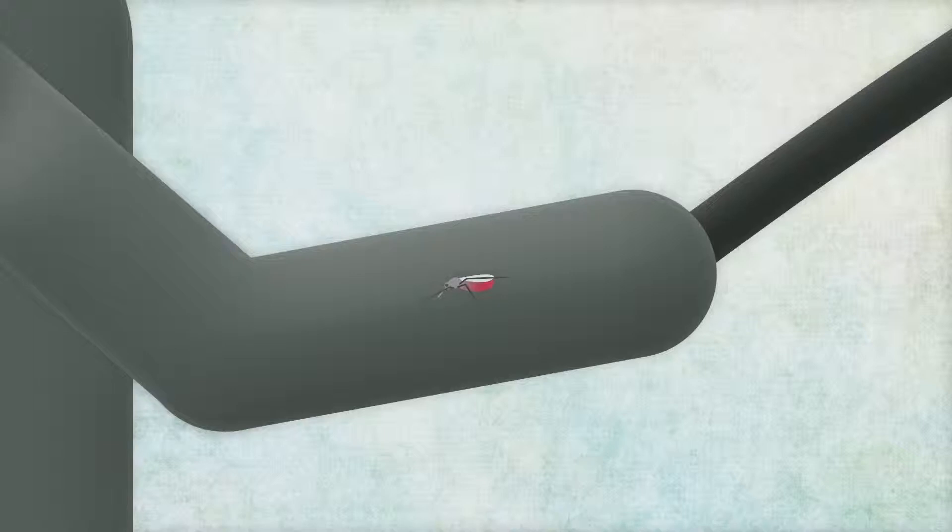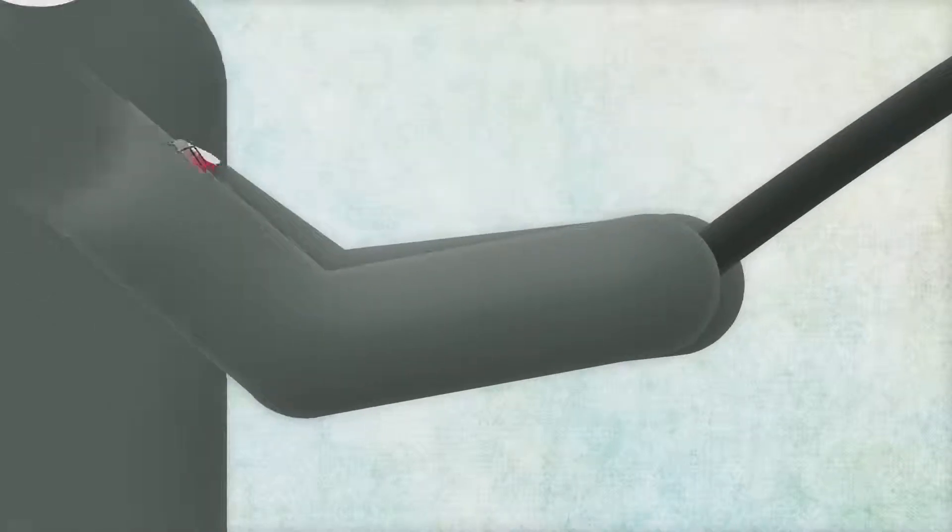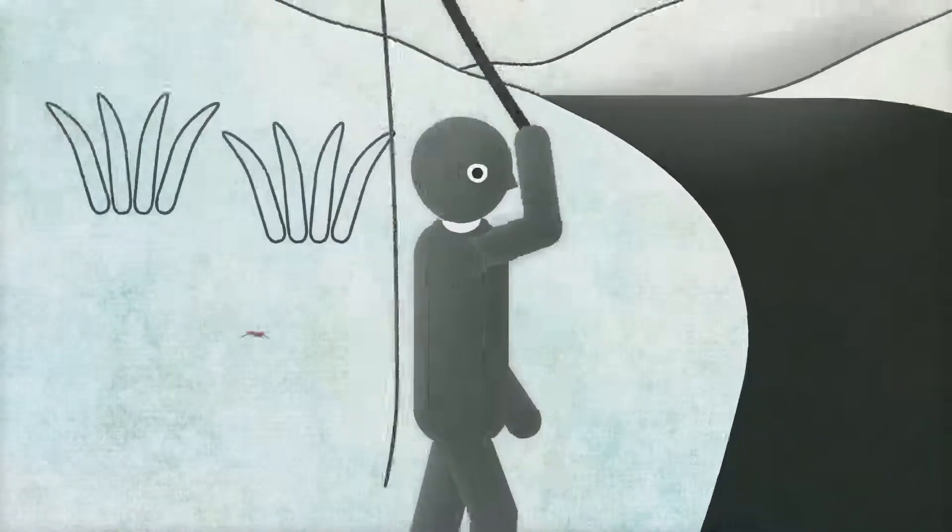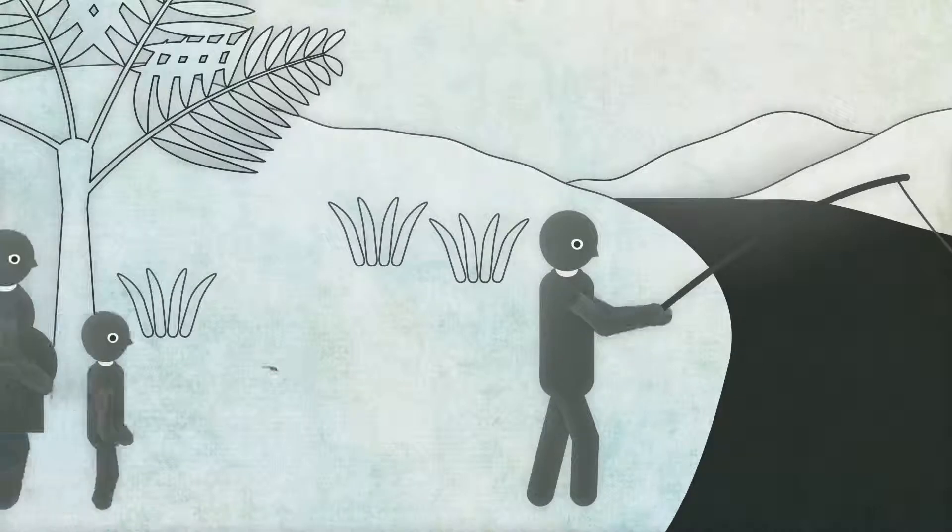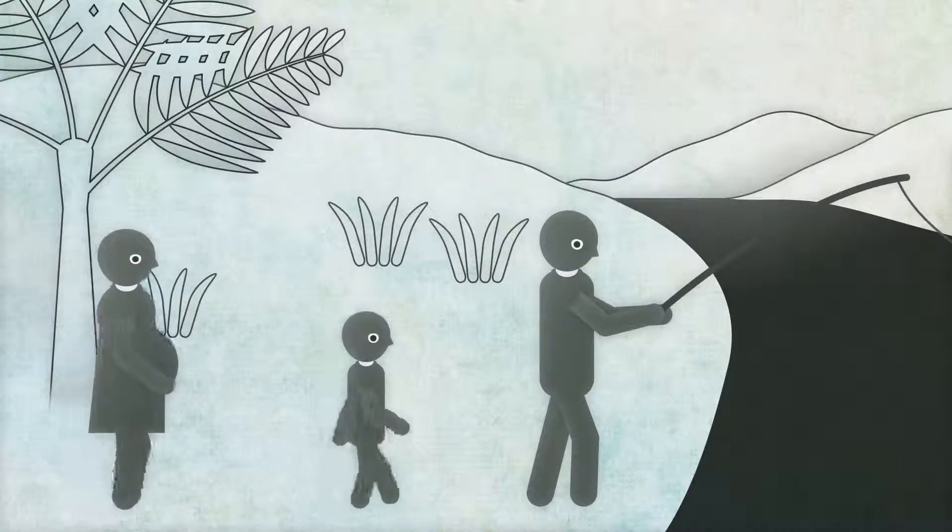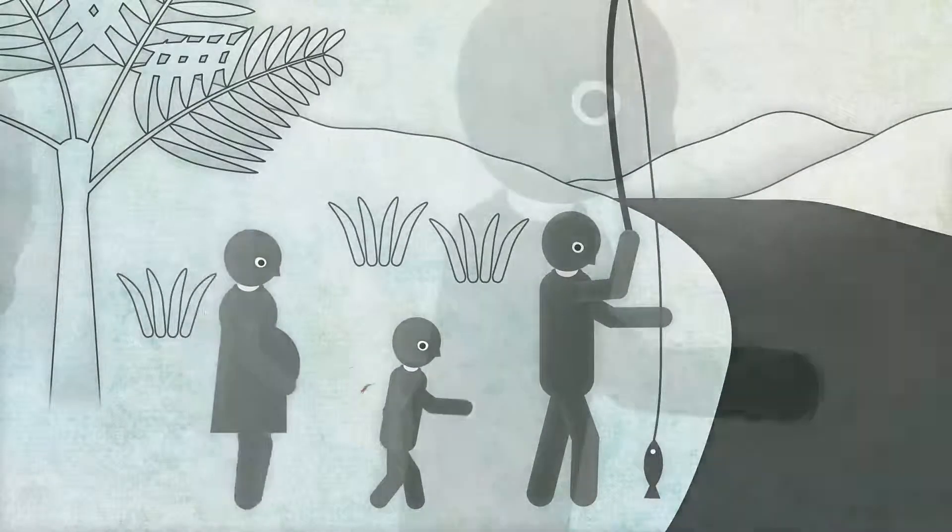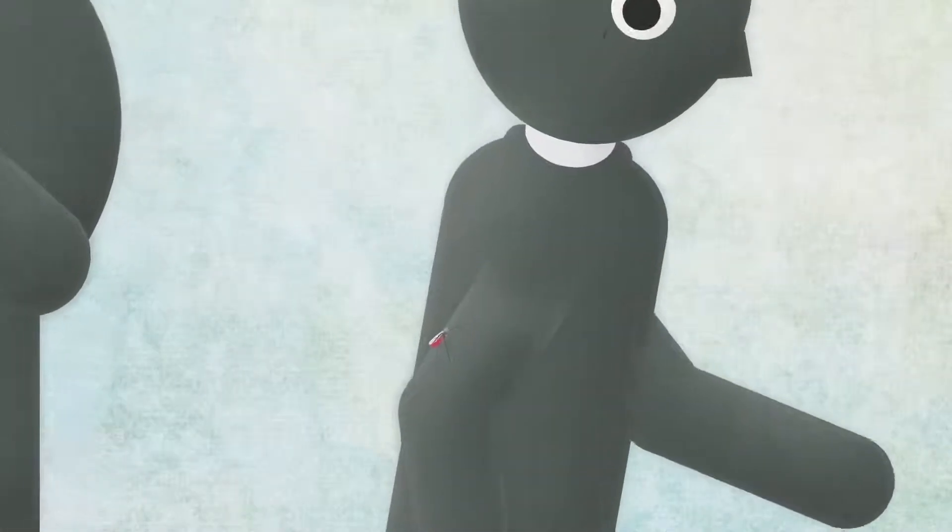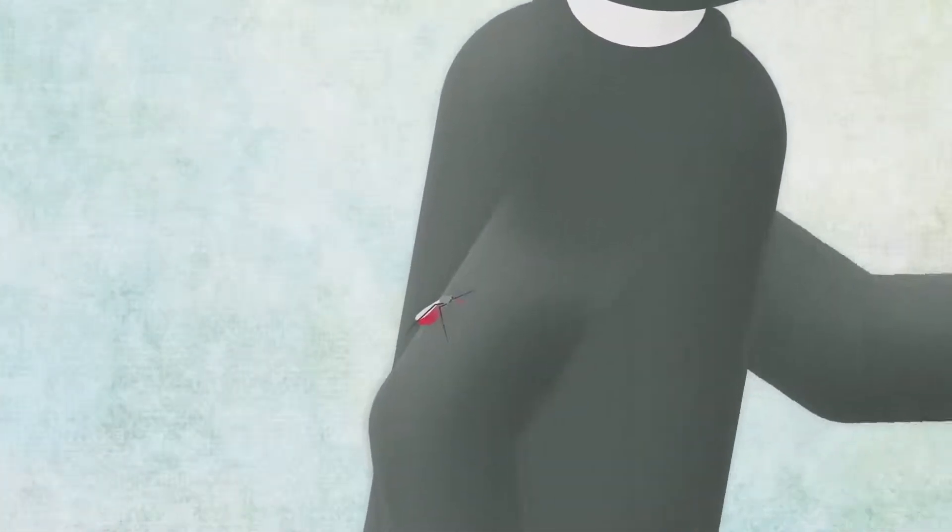People who contract the disease several times acquire a partial immunity. Young children with developing immune systems, and pregnant women whose immune systems alter during pregnancy, are most at risk of severe, and sometimes fatal, malaria.